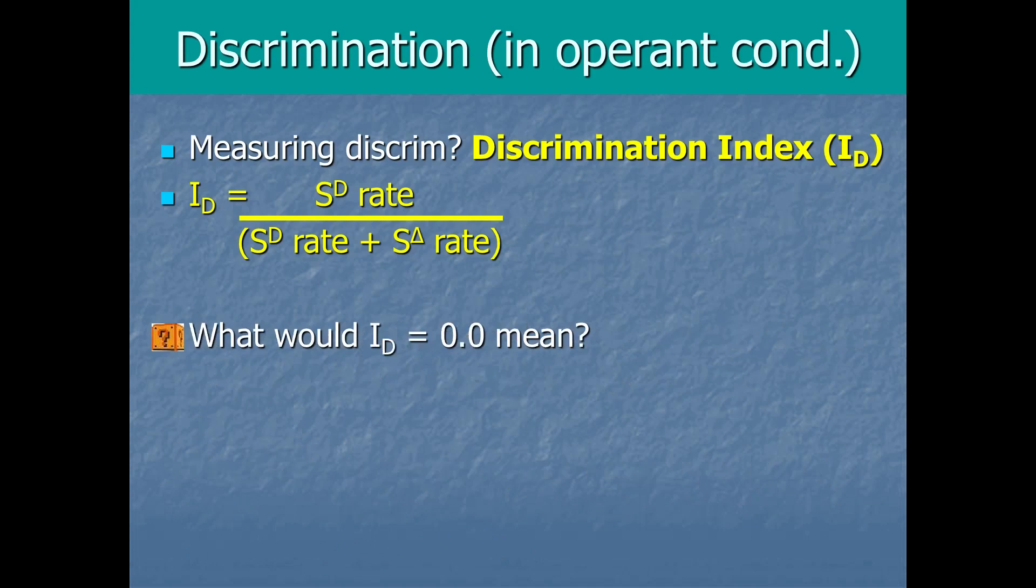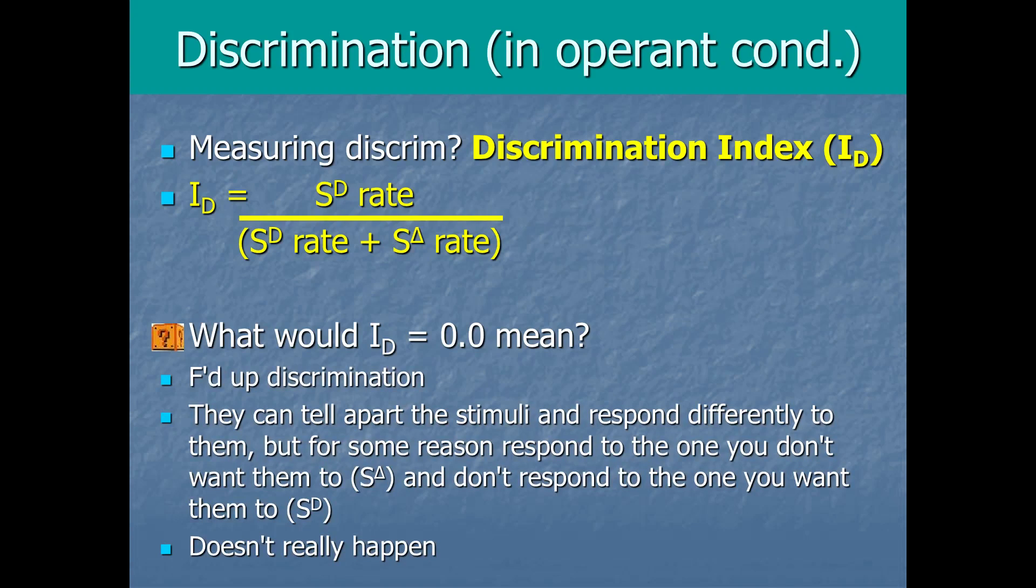Now, what would a discrimination index of 0 mean? Pause for a moment. Well, it means you probably screwed up your discrimination training or you screwed up the differential reinforcement procedure in some way. Like it means they can't tell or it means they can tell apart the stimuli and they do respond differently to them. But for some reason, they respond to the one you don't want them to. And they've got a 0 when the SD is there. They're not responding at all to the SD. Like that doesn't really make sense. You never see a discrimination index of 0. It doesn't really happen. It would mean you did something super wrong or maybe you were just recording numbers in the wrong column of your data sheet. So really, the discrimination index will basically always be between 0.5 and 1.0. It'll be between 50% and 100%. Basically, 50, the 0.5, that's no discrimination. Whereas 1.0, 100%, that's perfect discrimination. So the ID value should always be between 0.5 and 1.0.